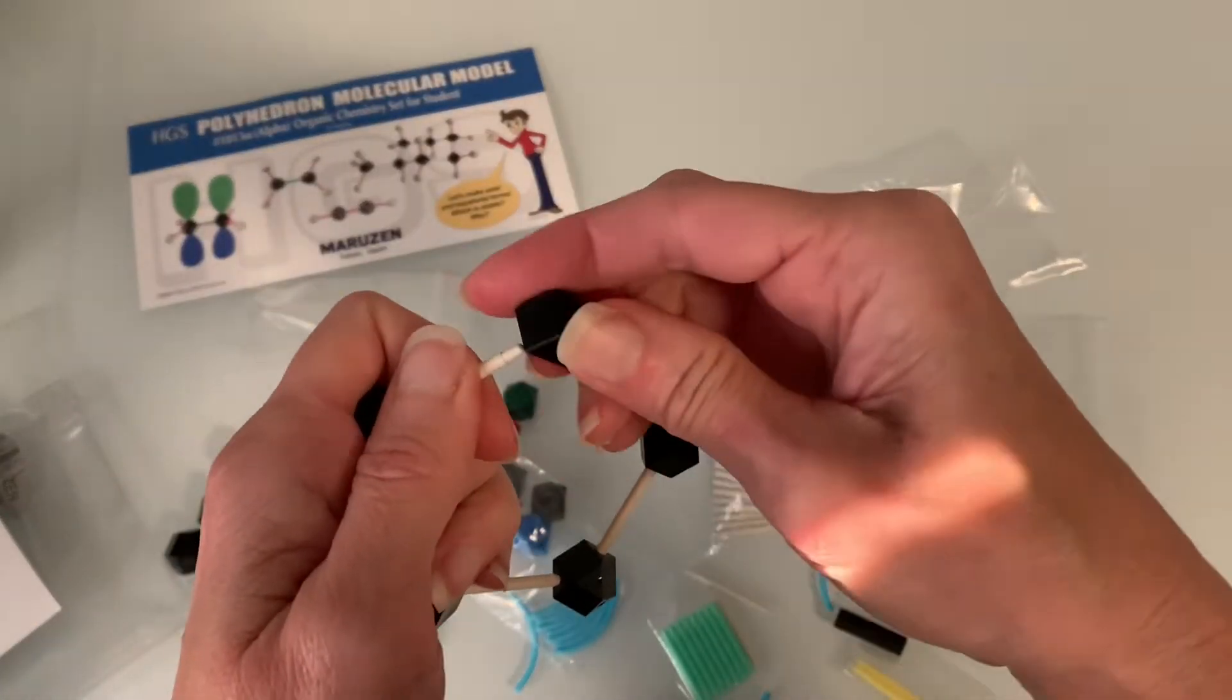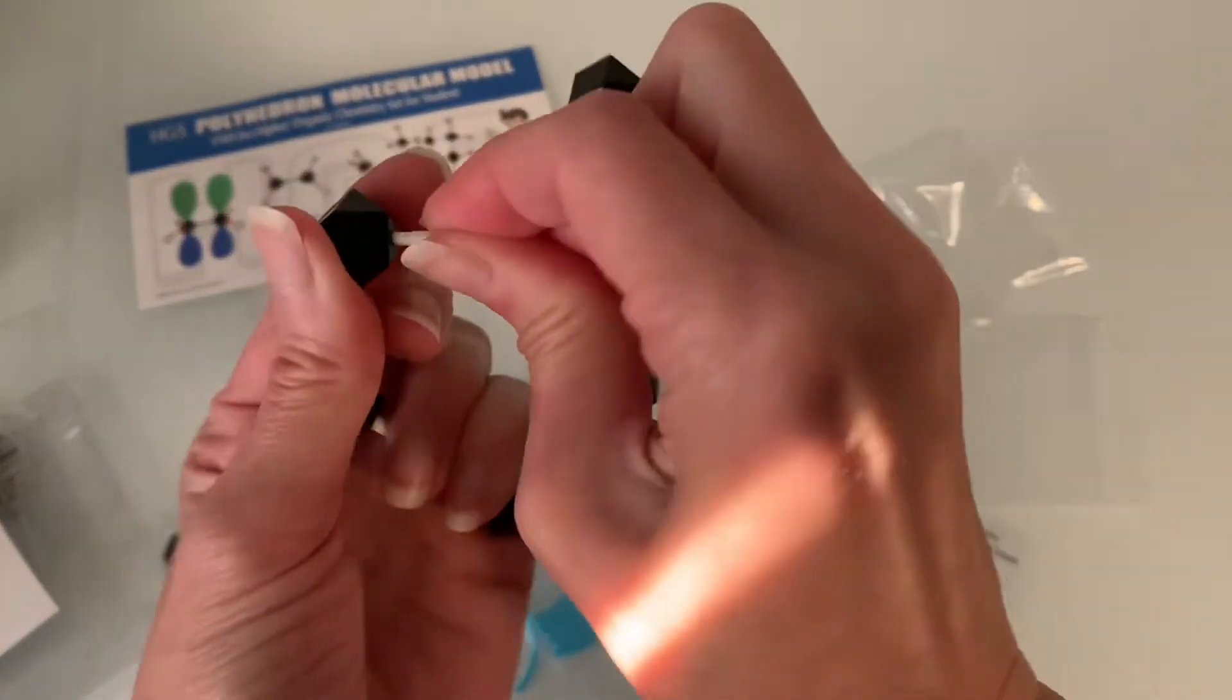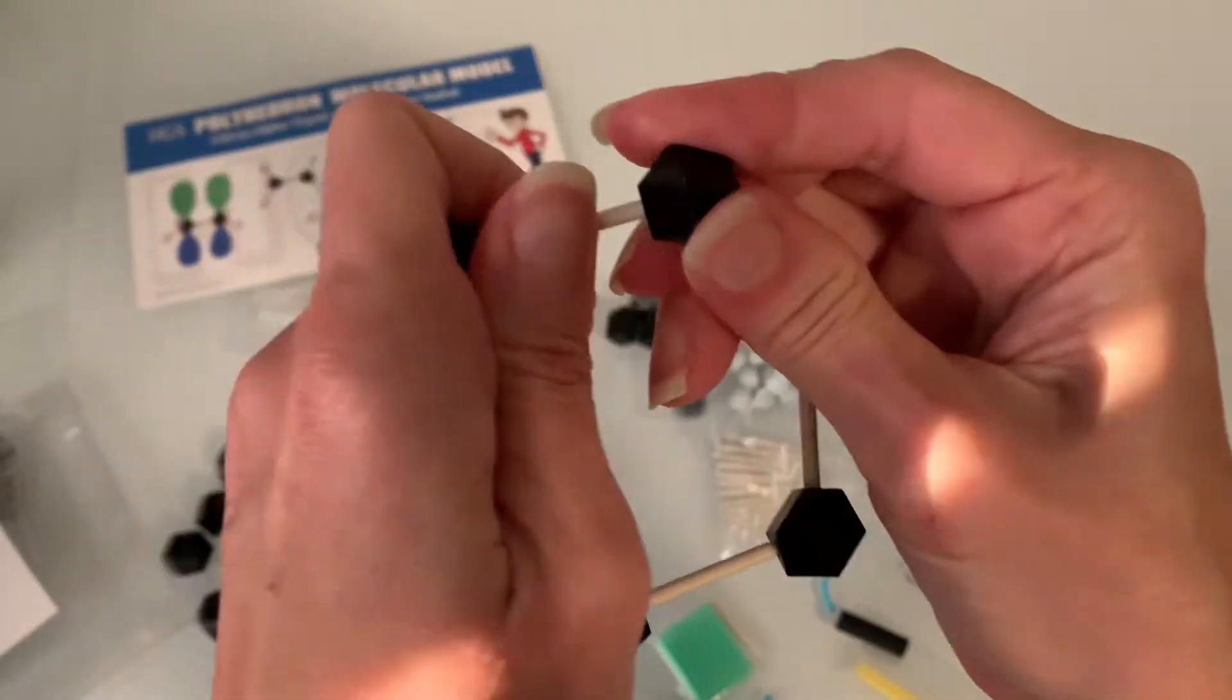This set comes with the atoms that you would need to build octahedral molecules or trigonal planar or trigonal bipyramidal molecules so it would also work really well for a general chemistry student.